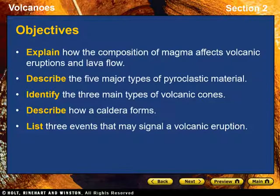At the end of this video, you should be able to explain how the composition of magma affects volcanic eruptions and lava flow, describe the five major types of pyroclastic material, identify the three main types of volcanic cones, describe how a caldera forms, and list three events that may signal a volcanic eruption.